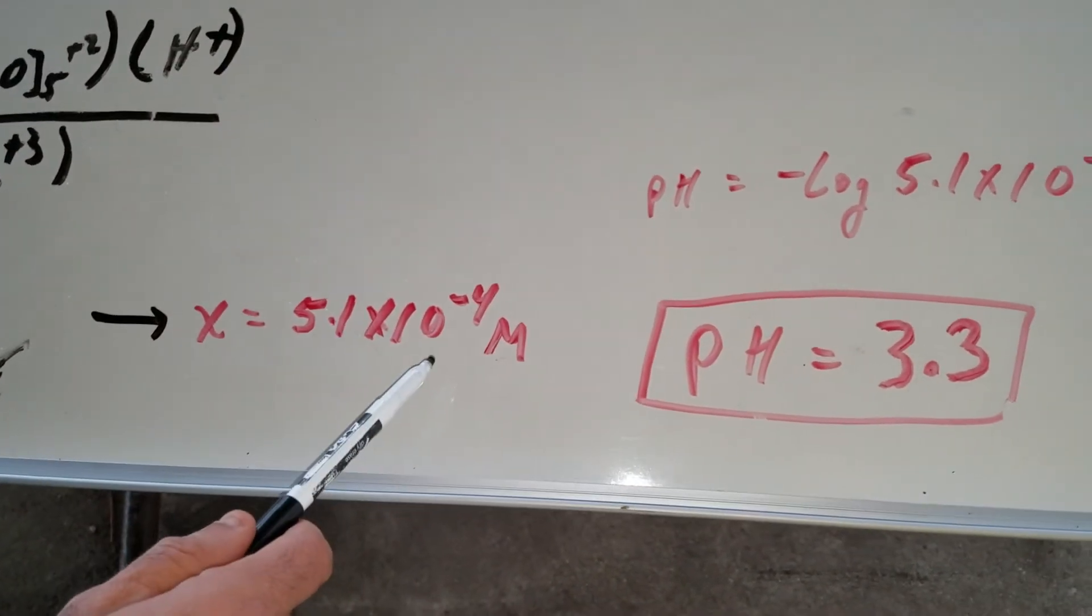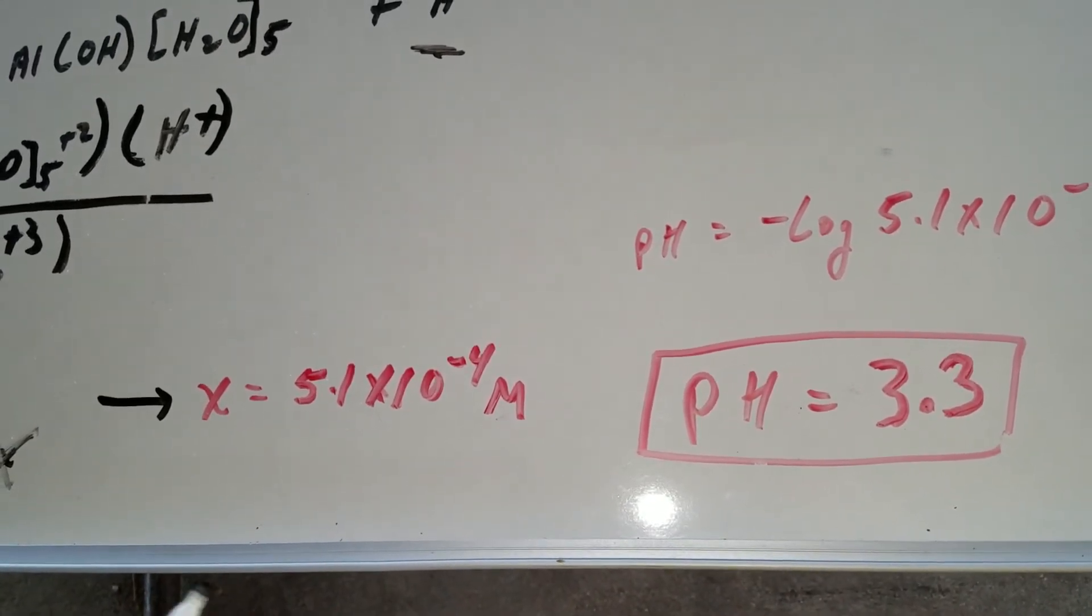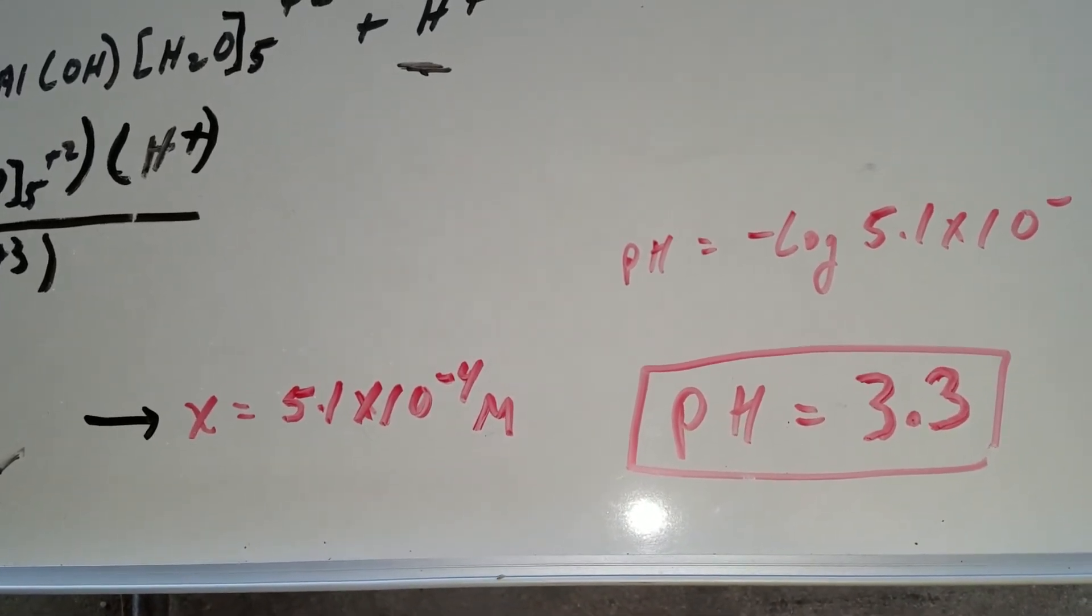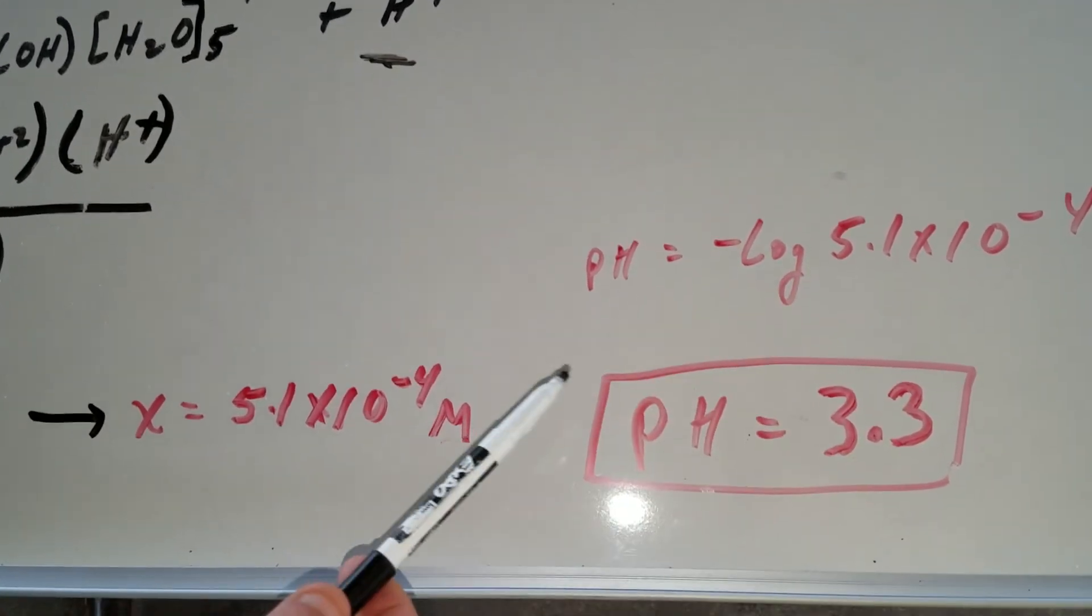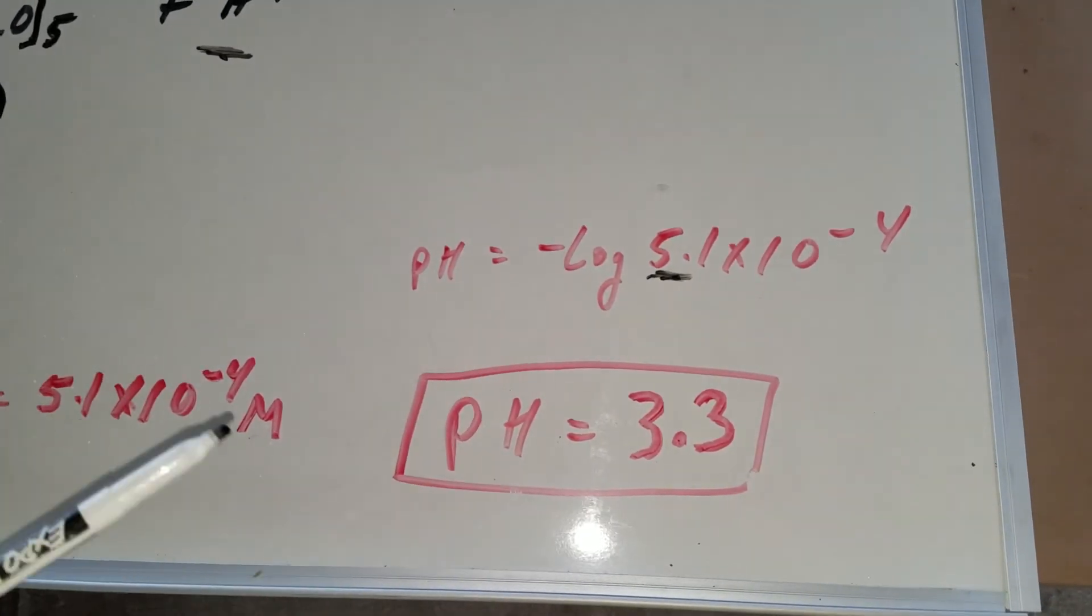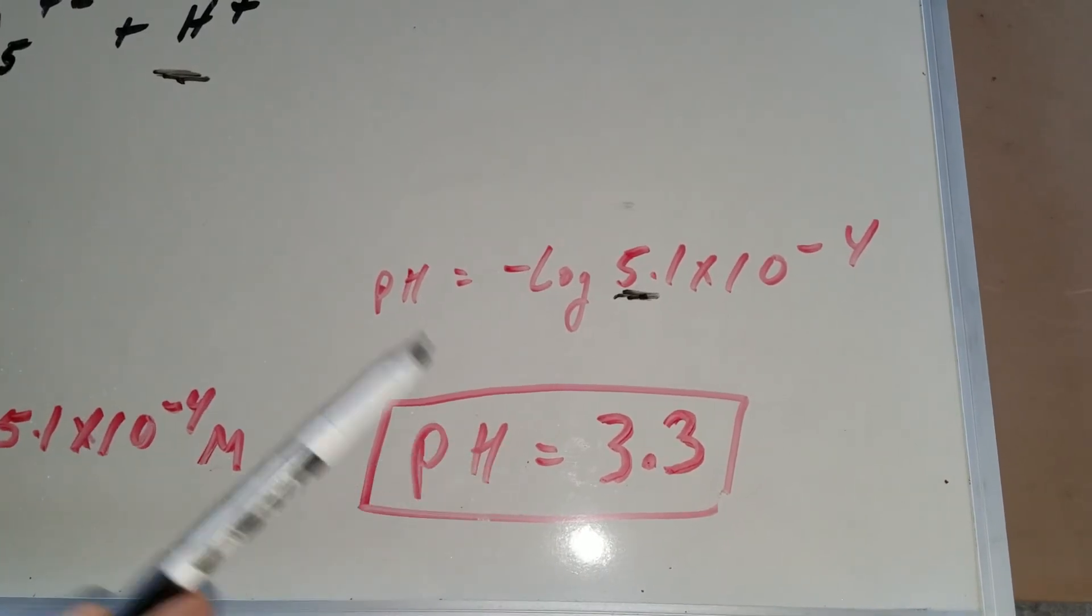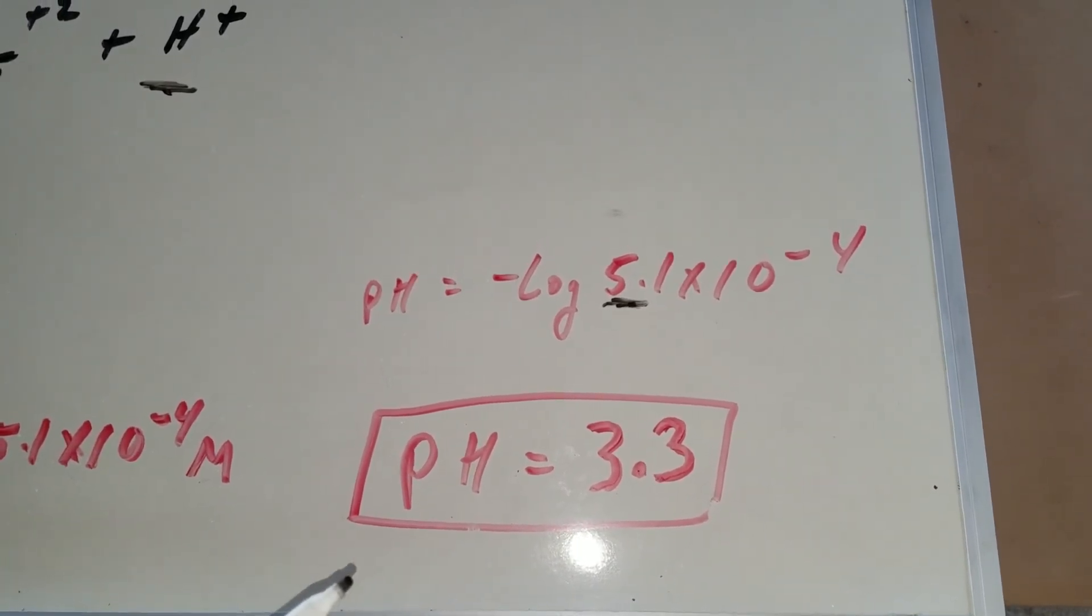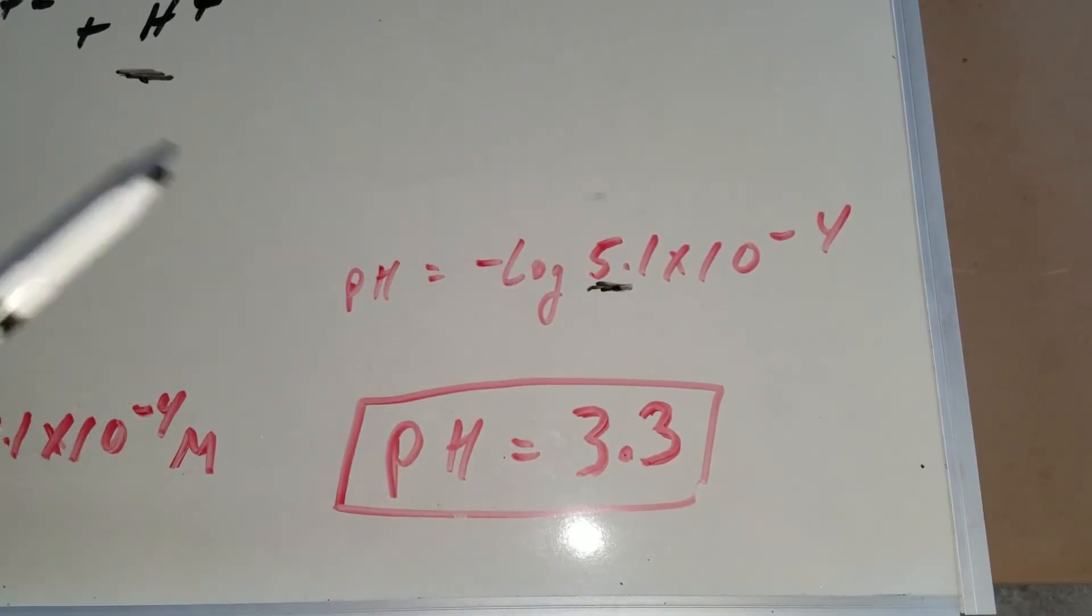Now that we know X, that's equal to the hydronium ion concentration. Minus the log of 5.1 times 10 to the minus four. Well, if it was minus the log of 1 times 10 to the minus four, it would be 4. But since this is a 5 here, the answer would be less than 4, and we're going to come down.